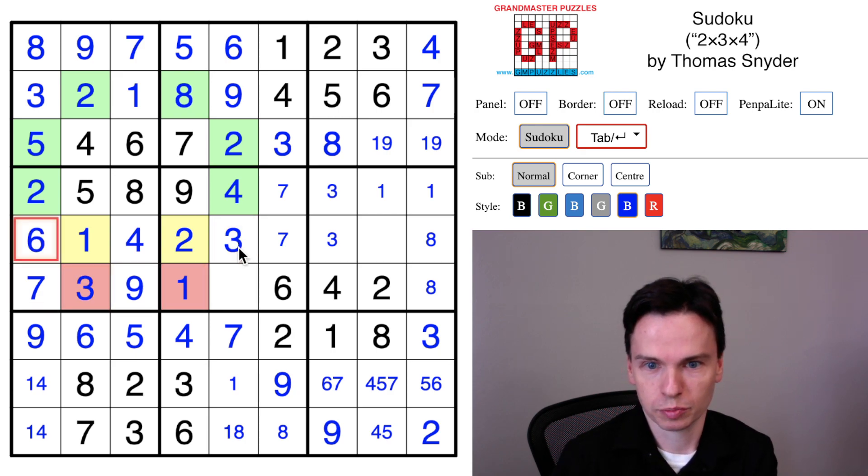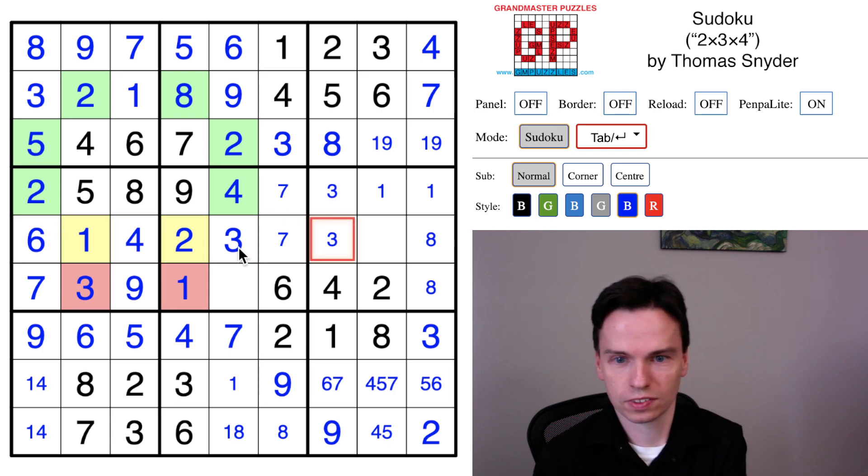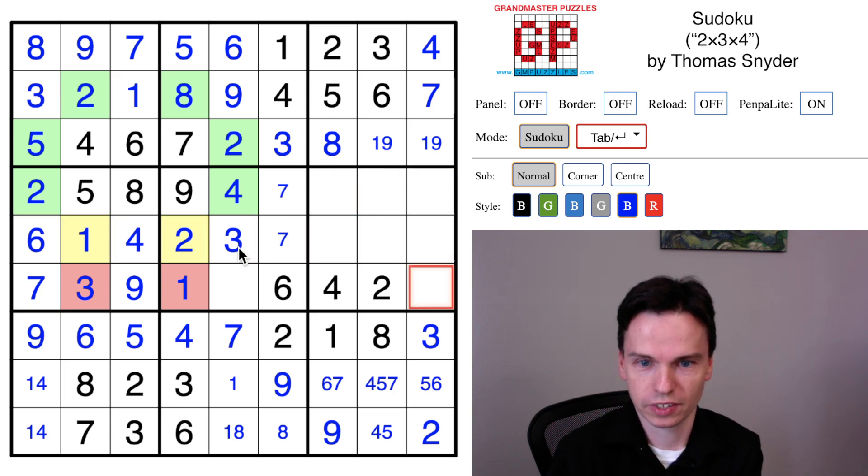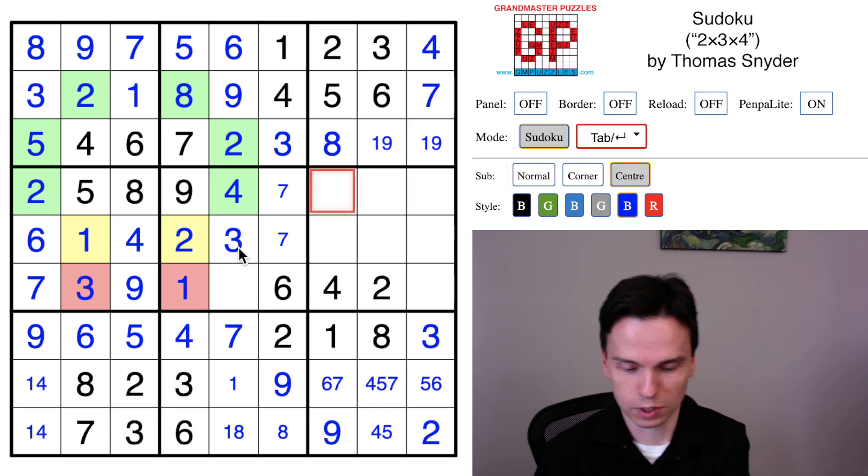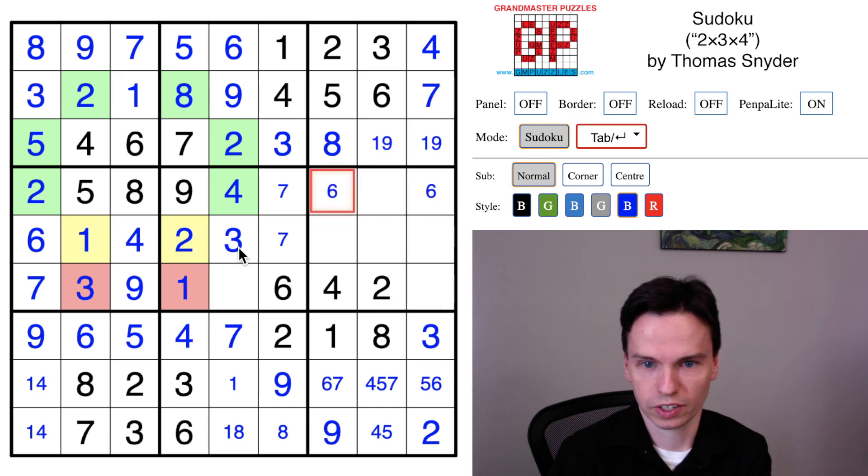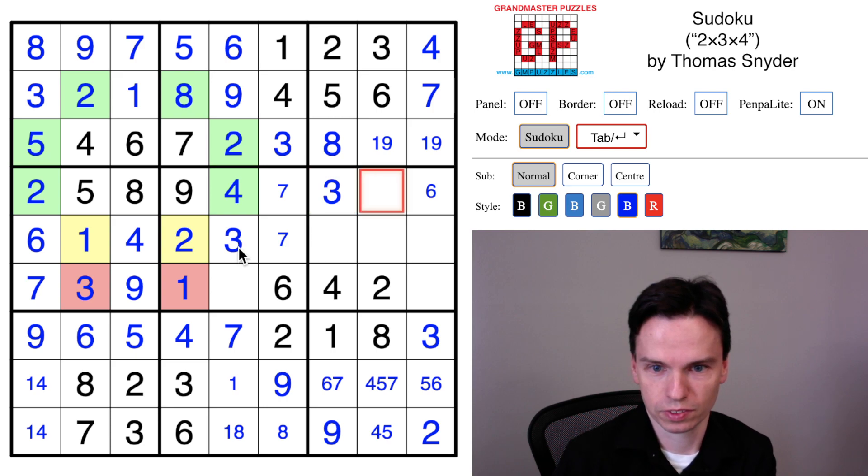We have a six completing this box. That's now as we come over to the right, we'll just clear some digits out. The six is going to be in one of these two cells. But if we look, the very last place for a three is on the left. So three is here. Six is here. Push the six down here.